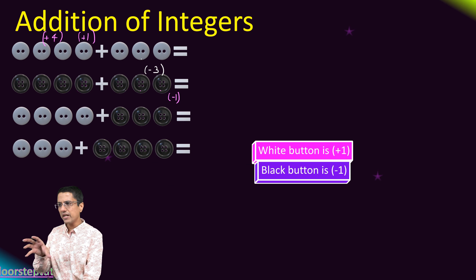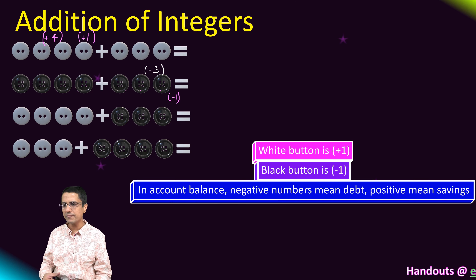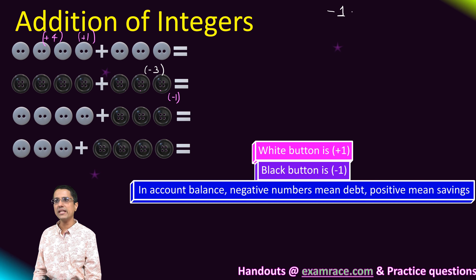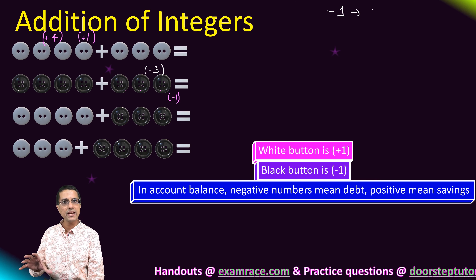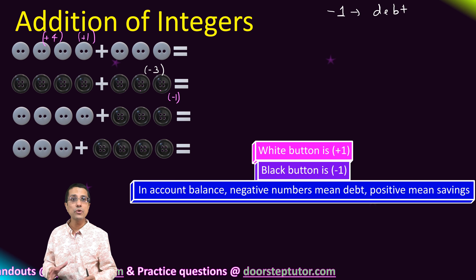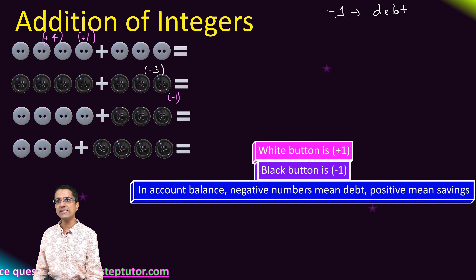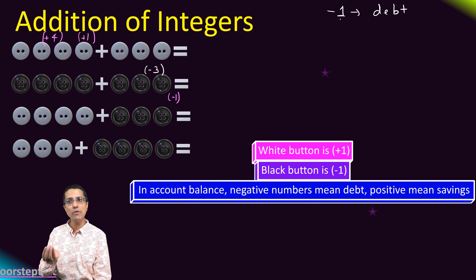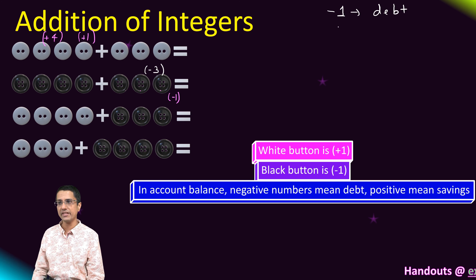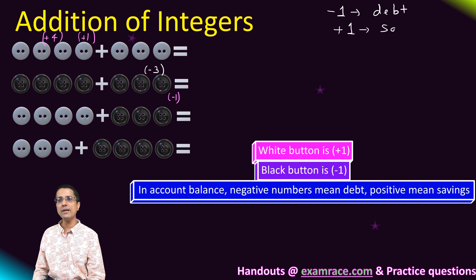We'll also use the analogy of account balances. If I have a negative balance in my bank account, it doesn't represent real savings — it actually denotes debt. It means I owe that many rupees to the bank. A positive balance means real savings.